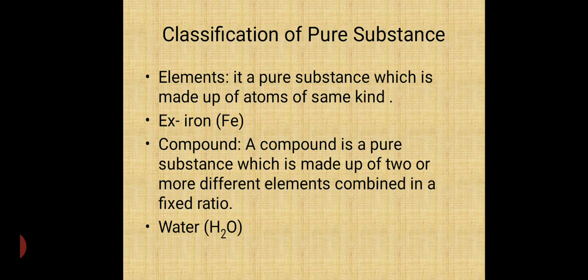Classification of pure substance. First, element. The whole world is made up of elements only. Element, it is a pure substance which is made up of the atom of the same kind. For example, if I am having iron rod and I am grinding it, I will get the small particles of the iron only, Fe only. Such type of element in which the same kind of atoms is made up is called as element.